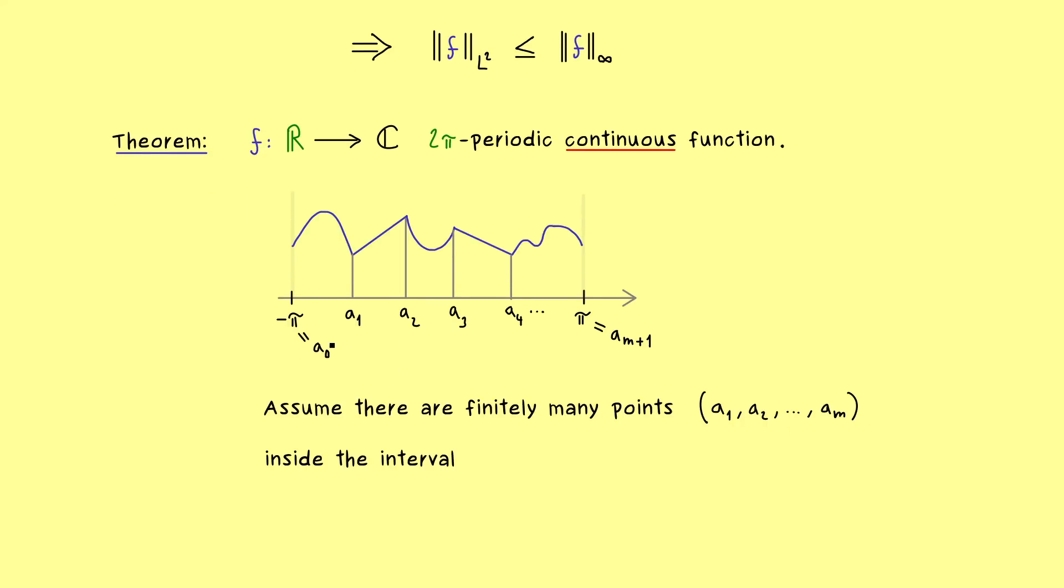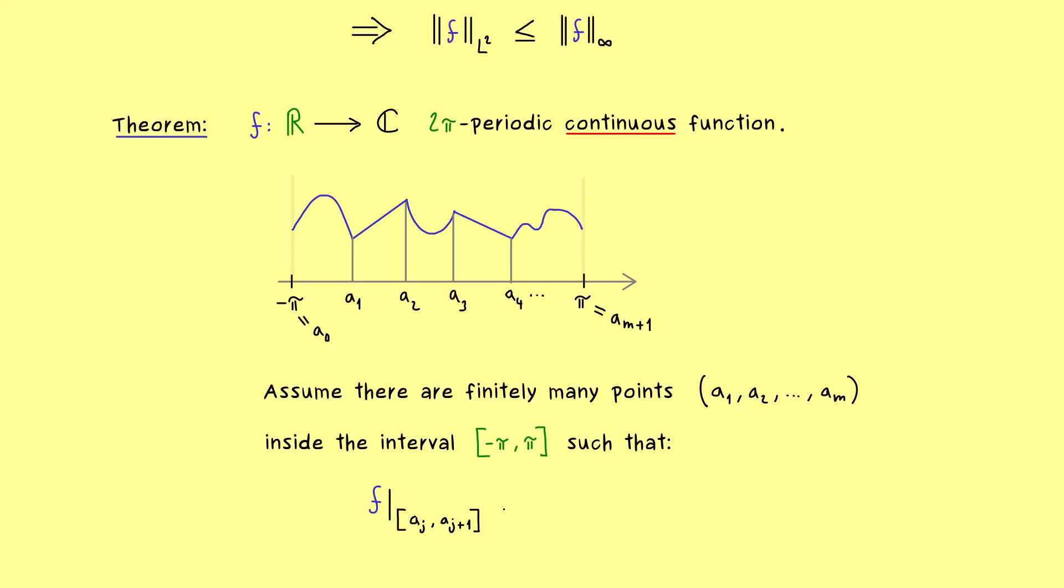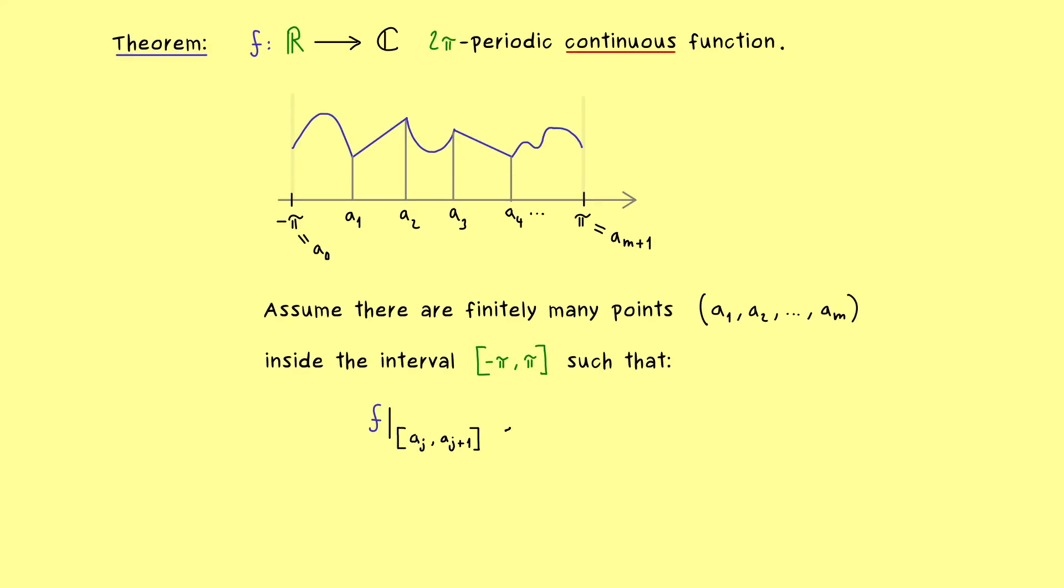So in summary what we assume here is that we have only finitely many points we call a_i, and they should all lie inside our interval from minus π to π. Most crucially they can be chosen in such a way that the function f restricted to the subintervals is a C^1 function. Obviously the subintervals can be written as a_j to a_{j+1} where j goes from 0 to m. Hence if we consider the function with that domain then we have a continuously differentiable function, and you know the short formulation for that is just C^1. Okay, there we have it, this is the whole assumption of the theorem.